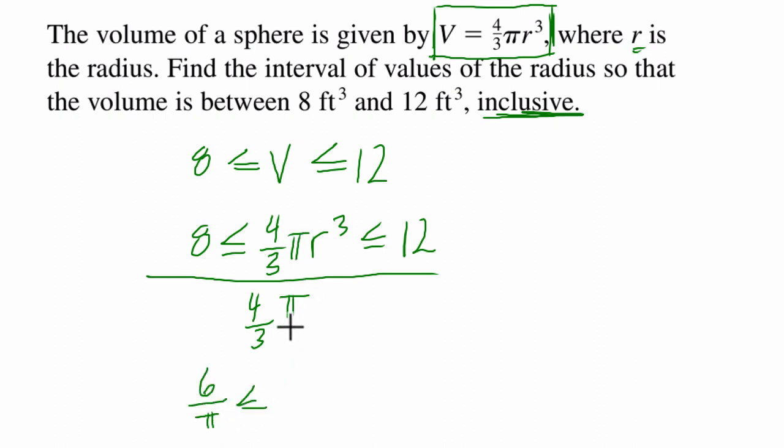less than or equal to 4 thirds pi divided by itself, cancels out. r to the third, less than or equal to 12 times 3 fourths.